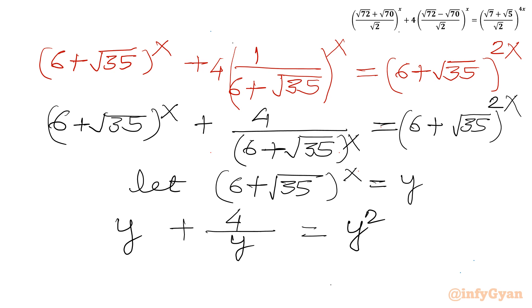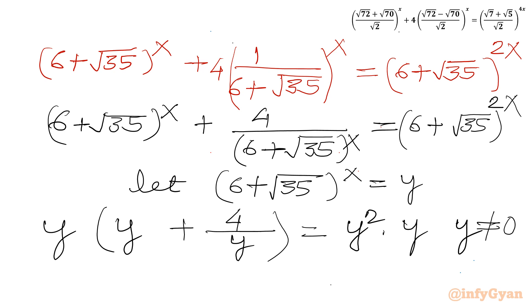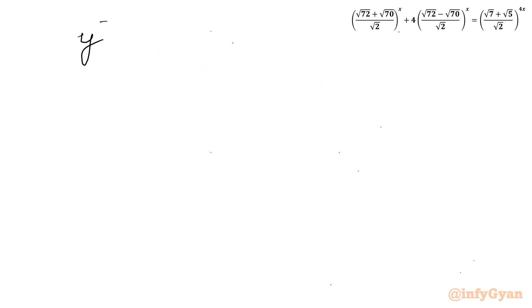Now I multiply both sides by y (noting y is non-zero), giving y² + 4 = y³. Taking all terms to the RHS: y³ − y² − 4 = 0.